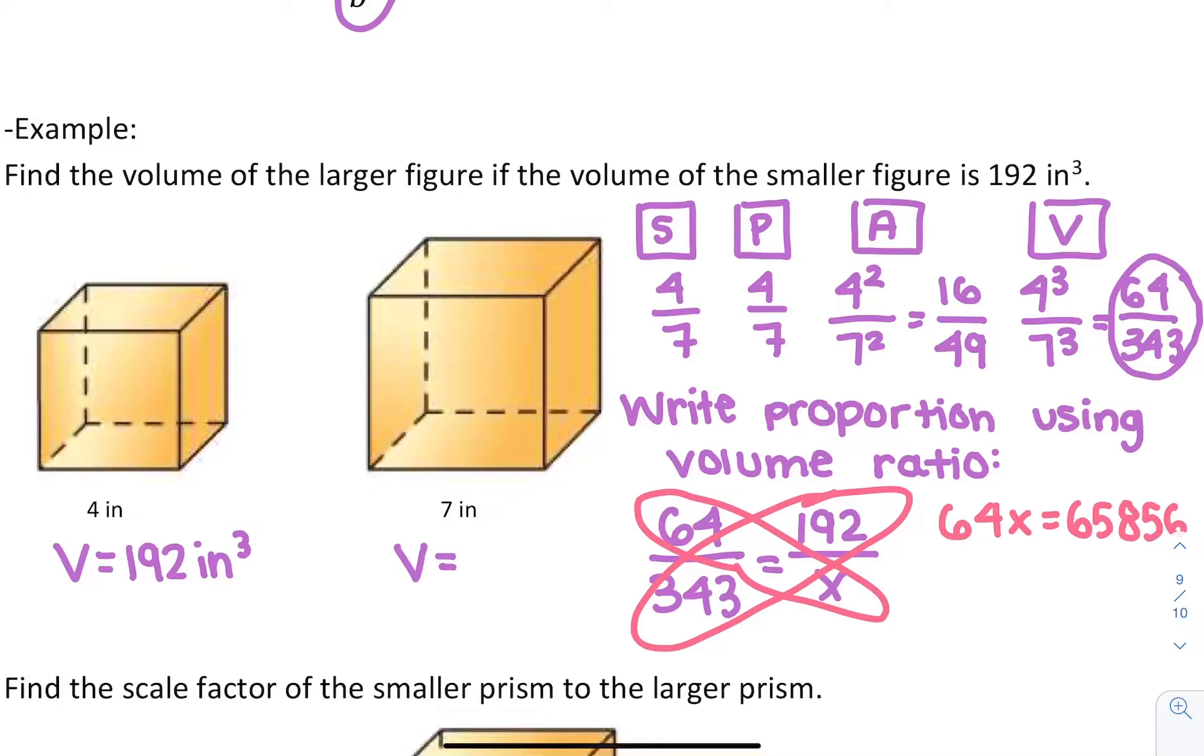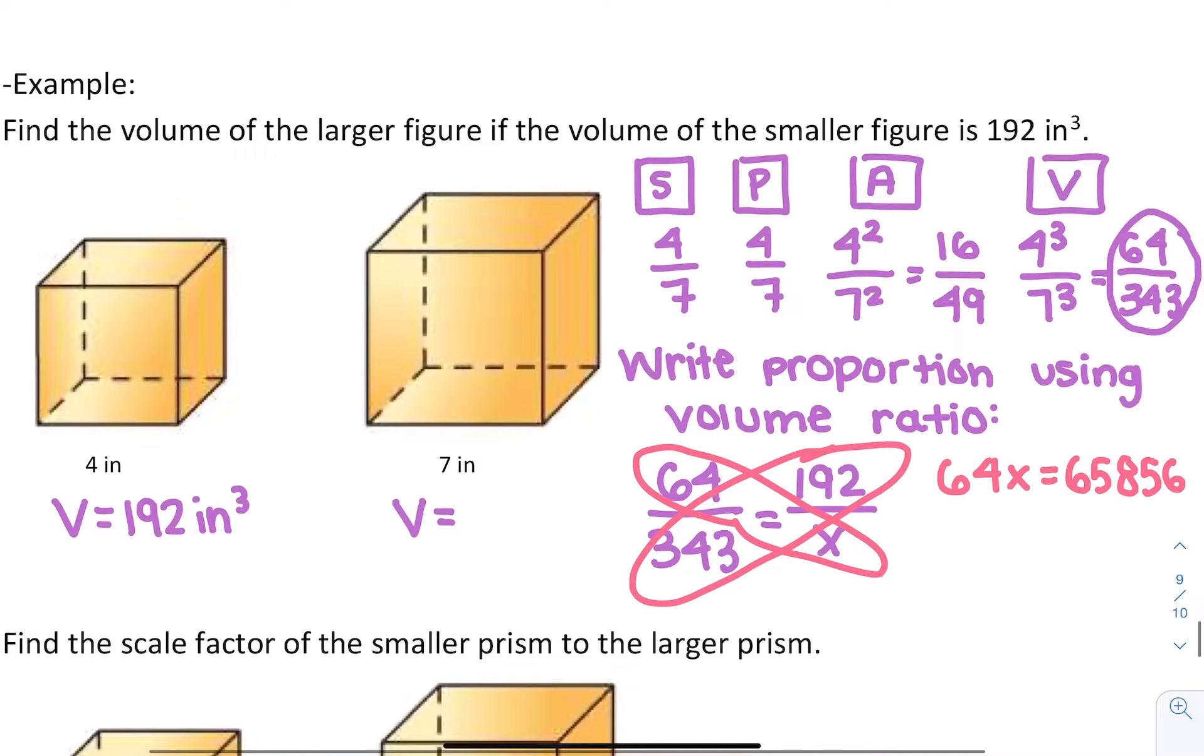Then we divide both sides by 64 to find x. So x turns out to be 1029 inches cubed. That is the volume of the larger box.